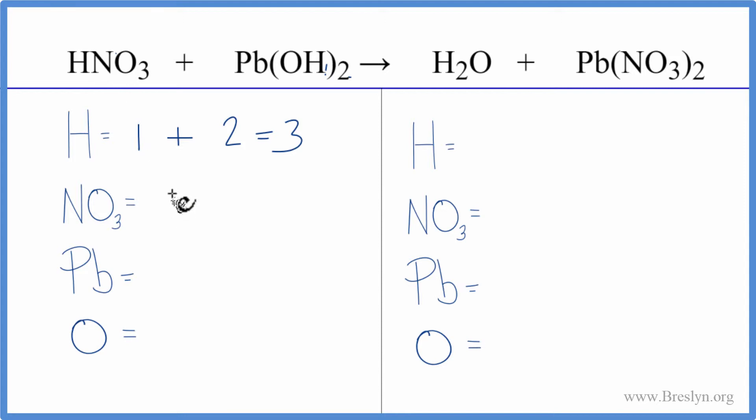So we have one NO3, we have one Pb, and then oxygens, we have one times two. That gives us two oxygens, and we don't count these oxygens because we already counted them.